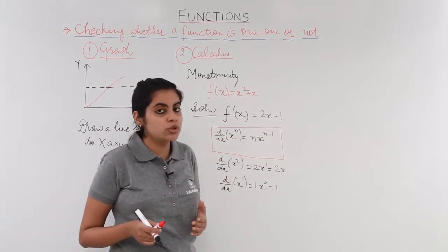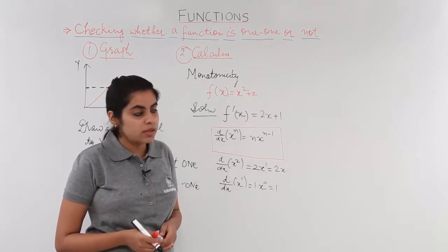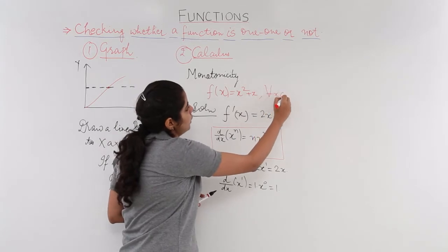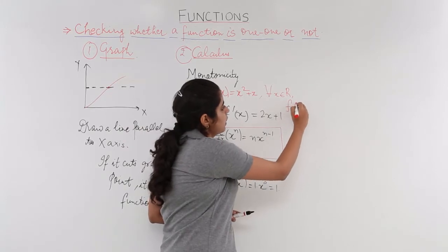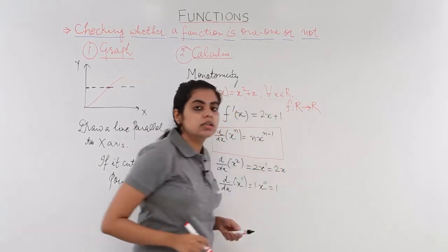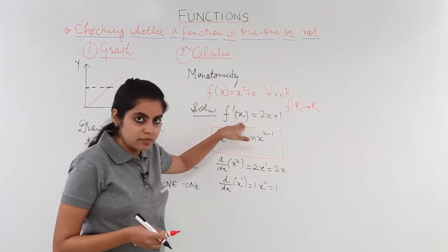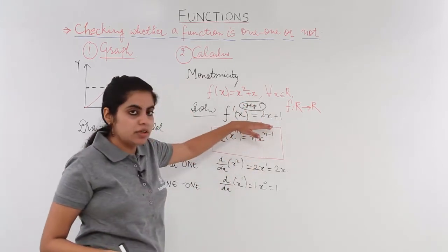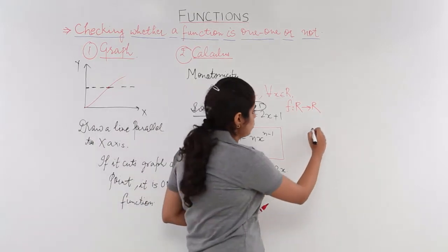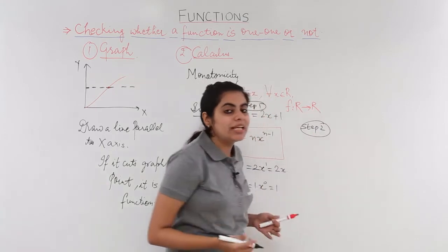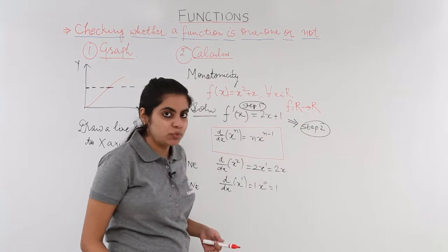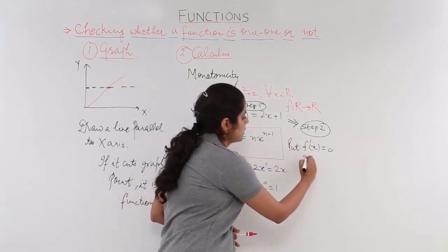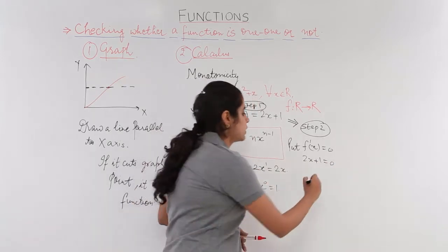So what do we do? We find out the first derivative. After finding it, we check the domain — here, x belongs to all real numbers, mapping from real to real. Step 1: find the first derivative. Step 2: put the first derivative equal to 0 to get critical points. So put f'(x) = 2x + 1 = 0, which gives x = −1/2. That is our critical point.